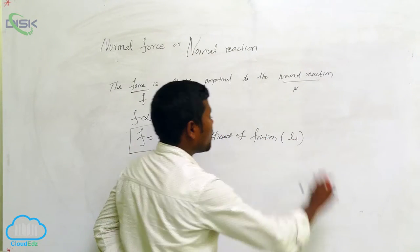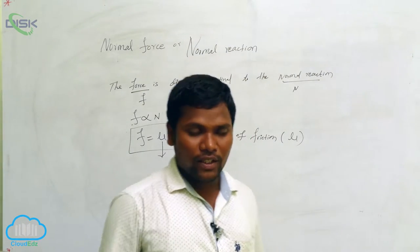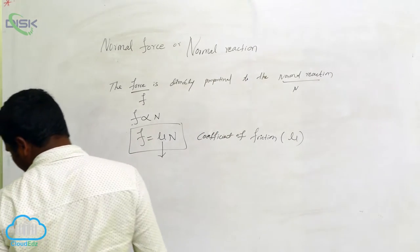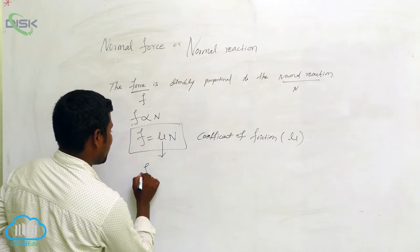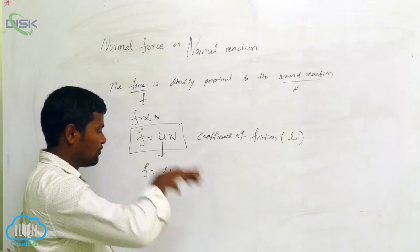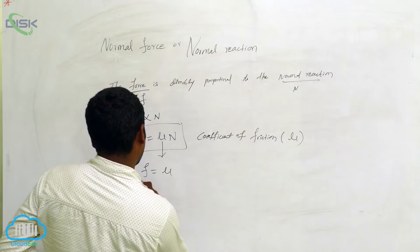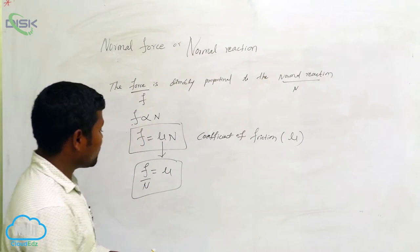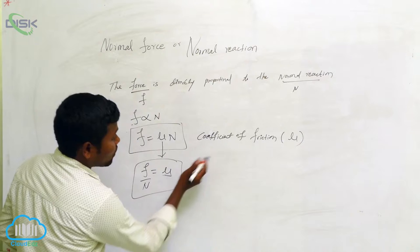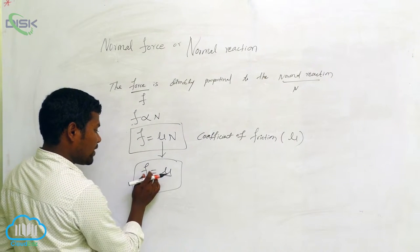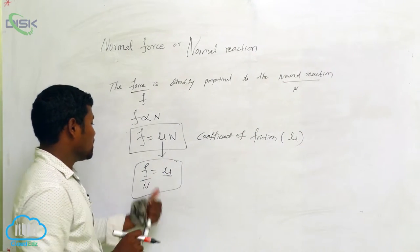Always we are taking the coefficient of friction as μ. Previously I said about the different types of frictions — first is static friction, second is kinematic friction, and third is rolling friction. From the formula f = μN, we can write the definition: coefficient of friction μ is equal to f by N. What is f? Frictional force. What is N? Normal force. So the ratio of frictional force to normal force is the coefficient of friction.